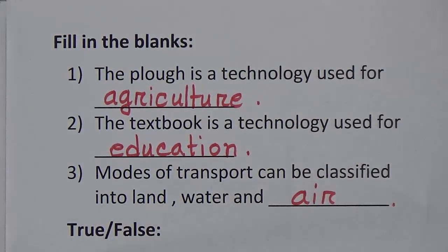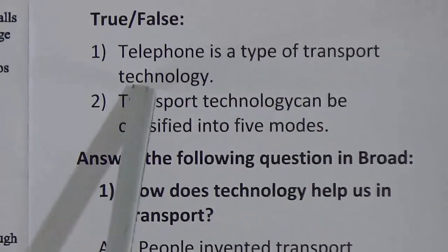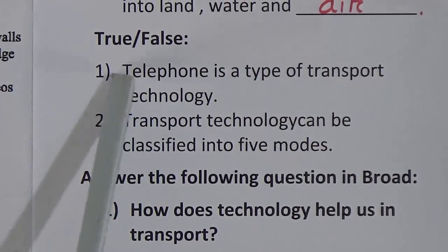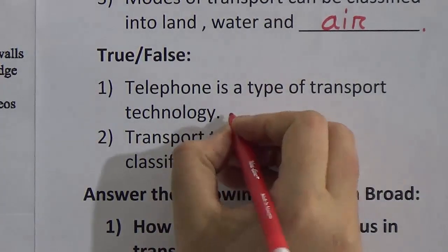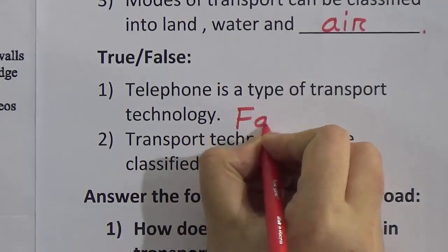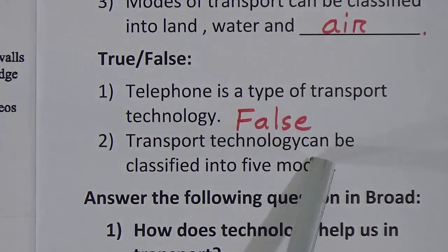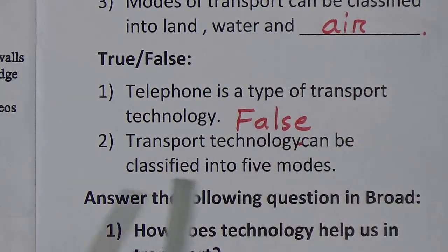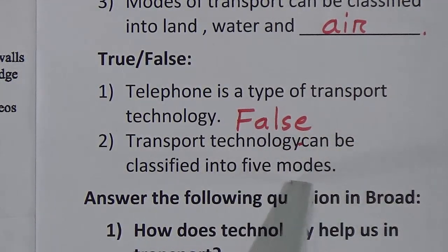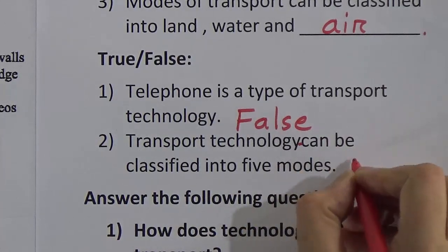Now we will do true/false. Number one: telephone is a type of transport technology. No, this statement is not true, so we will write here: false. Number two: transport technology can be classified into five modes. No, we know there are three modes. So this statement is also false — we will write here: false.